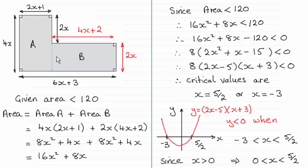We were given that the area of the garden had to be less than 120 square meters. I've split this up into two parts, A and B here. You could split this up in any other way - this is just an idea.